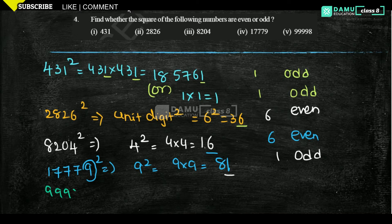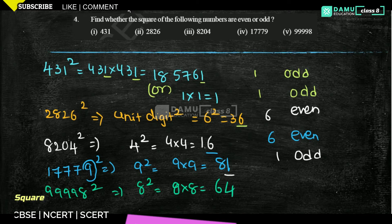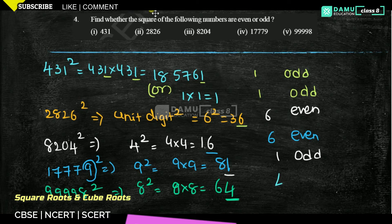Next one: 498 squared. Let's take the unit digit squared: 8 squared is 8 into 8, which is 64. The unit digit is 4, and 4 is even. Like that, we need to check whether the square of any number is even or odd.